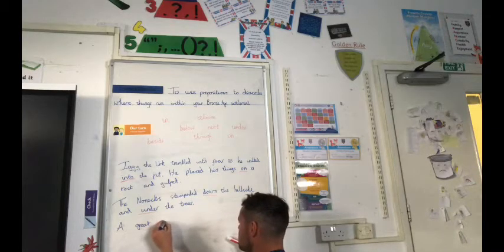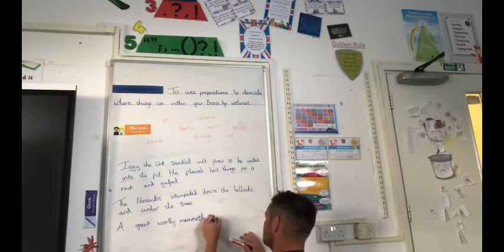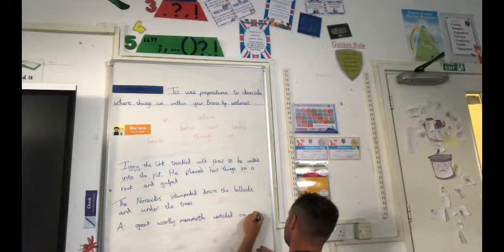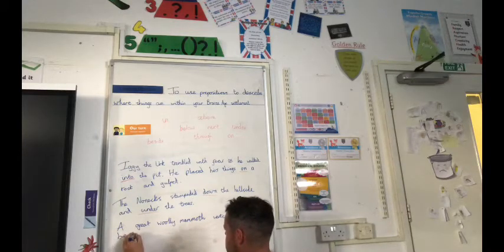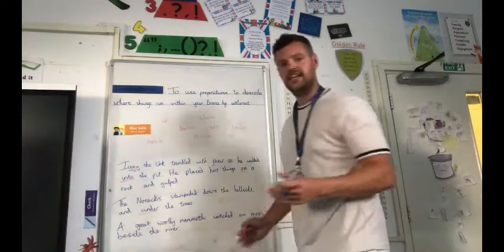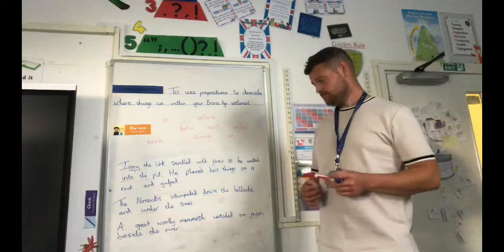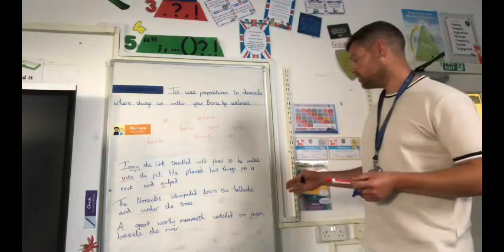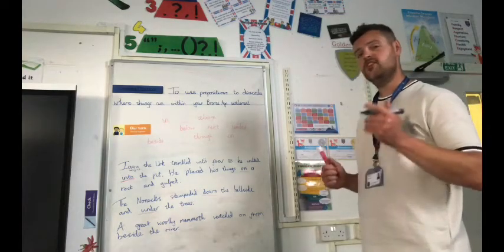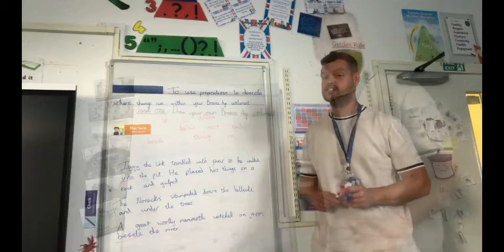And finally, let's go for, because some of you did some wonderful fact files on these creatures. A great woolly mammoth watched on from beside the river. Now, ask yourself, which word in that sentence gives us some information about location? Where something is? Where was that great woolly mammoth? A great woolly mammoth watched on from beside the river. The great woolly mammoth was beside the river. So, there's our preposition in that sentence. Well done.